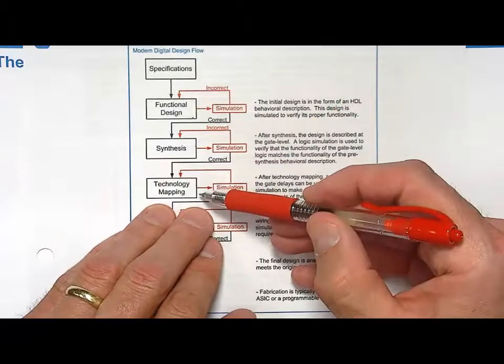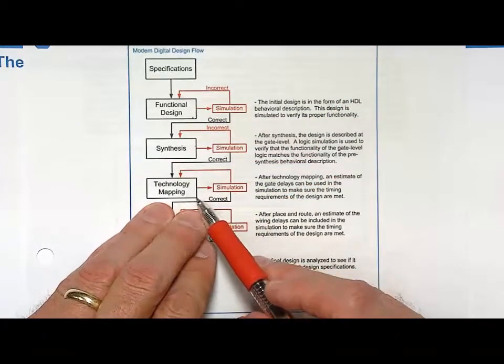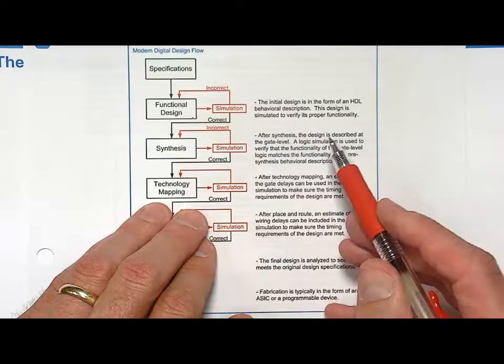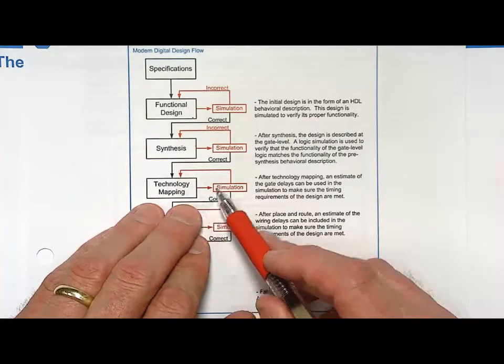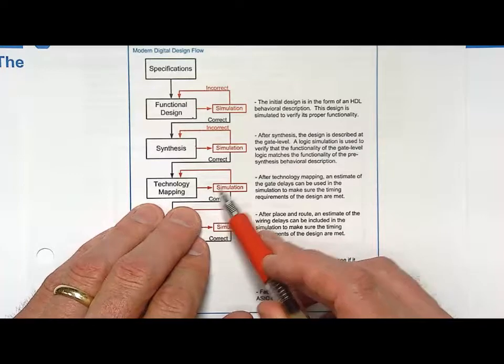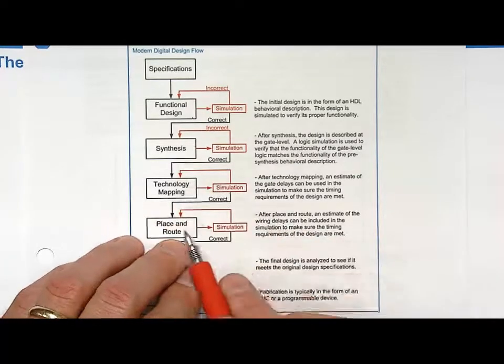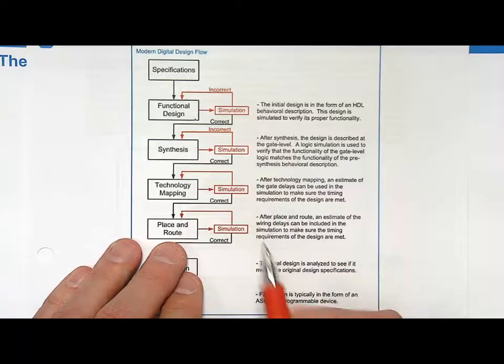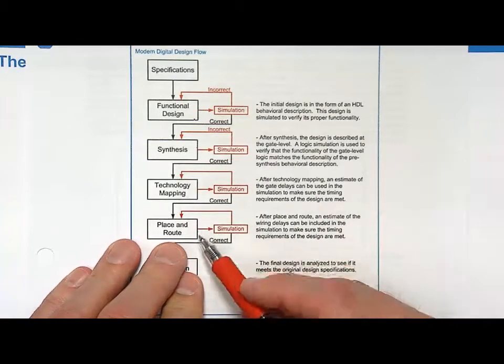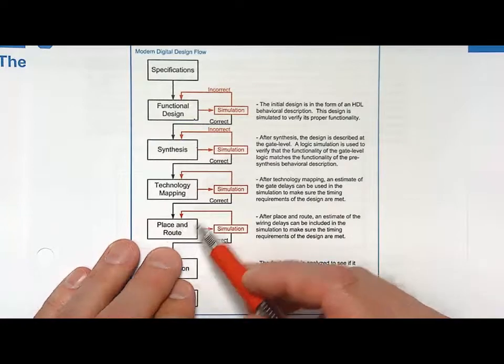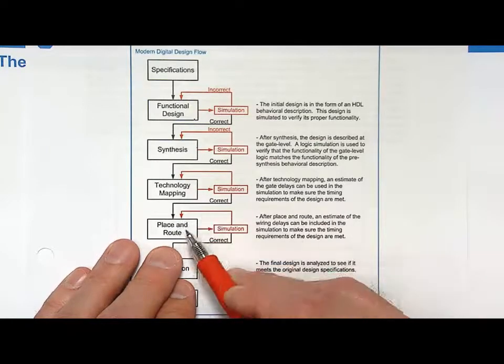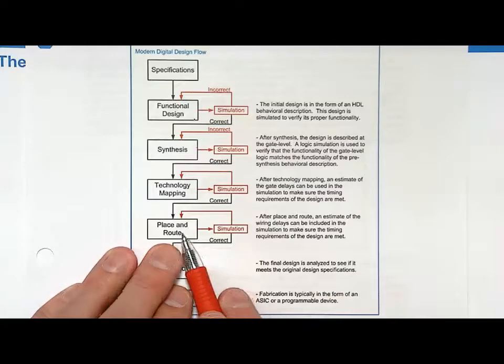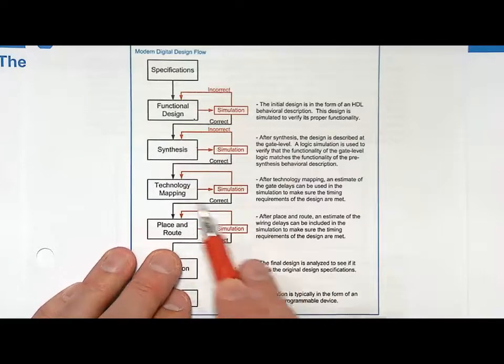Once you do that you can then technology map, and the technology map is an automated step. You pull information about the actual gates that you're going to be using from the vendor and you can include that in your simulation. At this point you can make sure that not only is it still working but it's actually meeting the timing requirements. Then you can place and route automatically since now we're usually talking about systems that are implemented on large fabrics, large integrated circuits or large programmable devices. We can place the many gates and we can route them, and when you have many gates the routing delay becomes non-negligible.